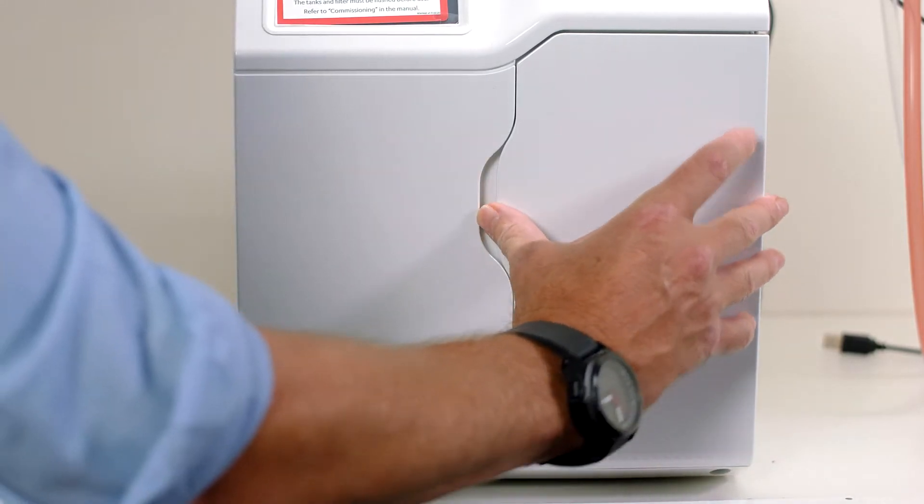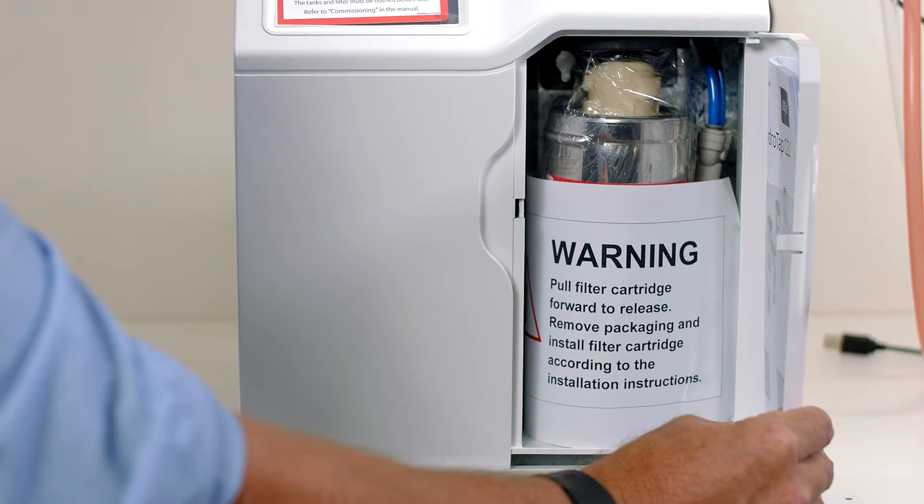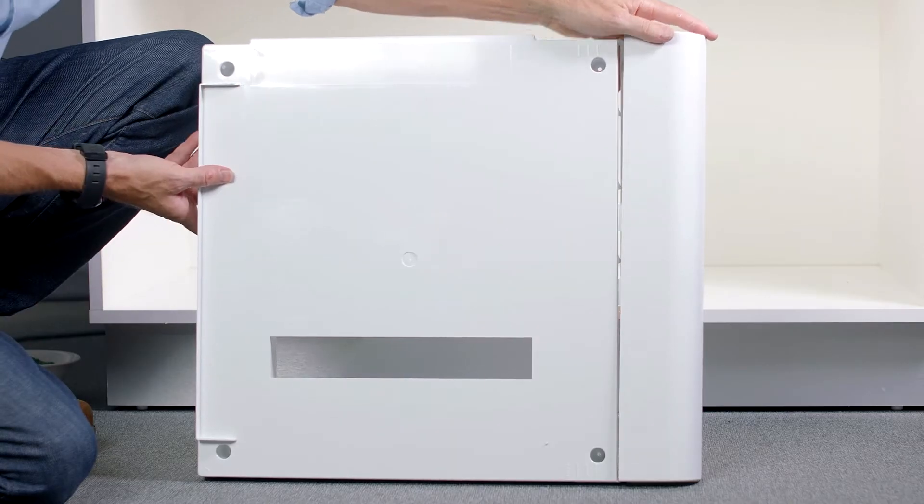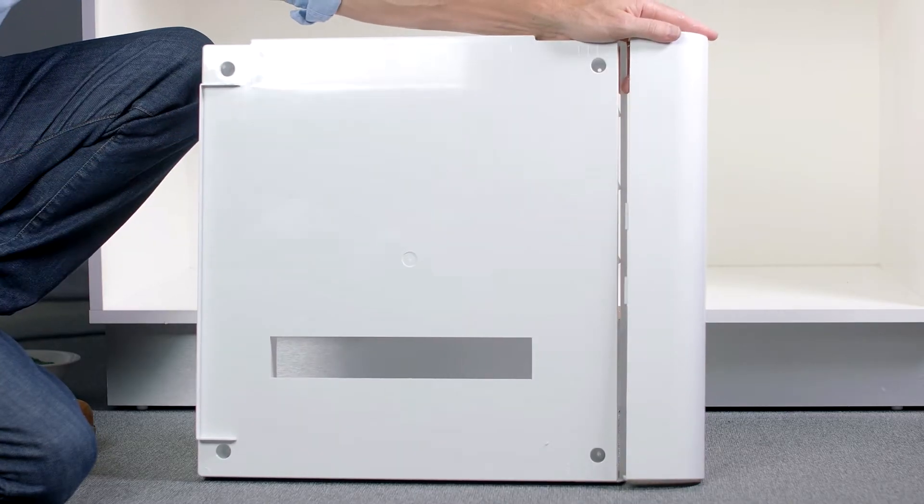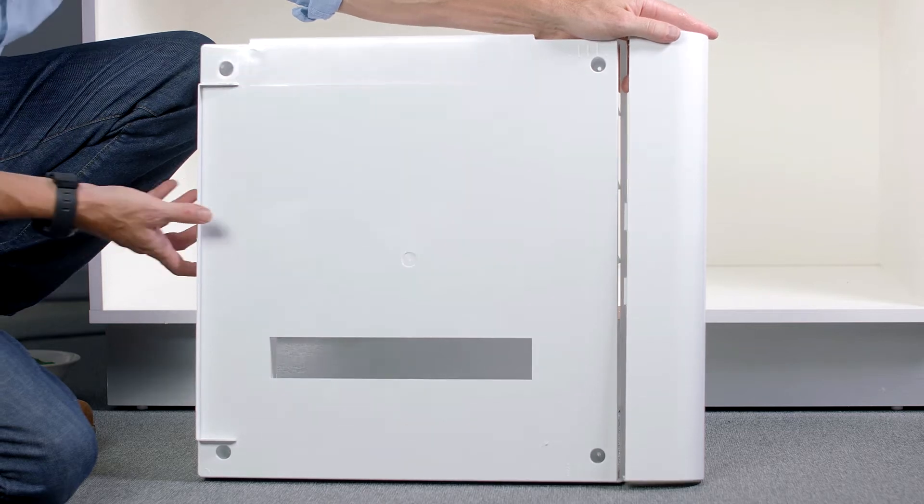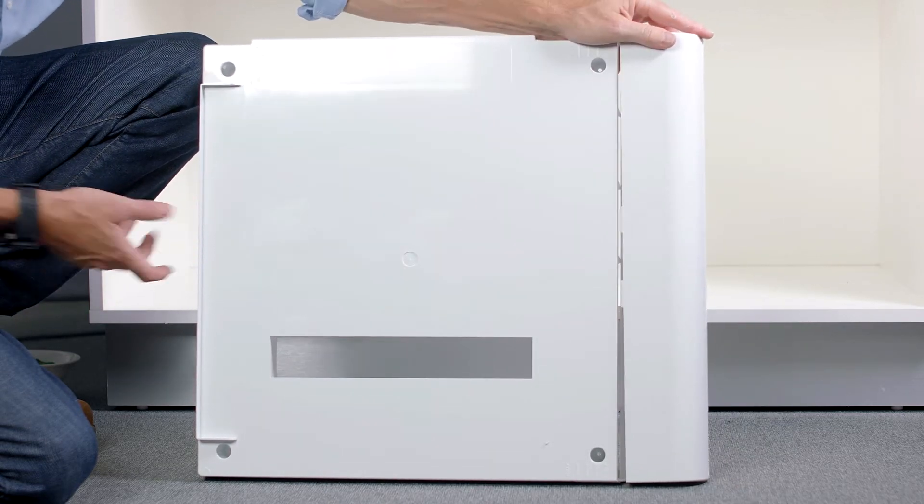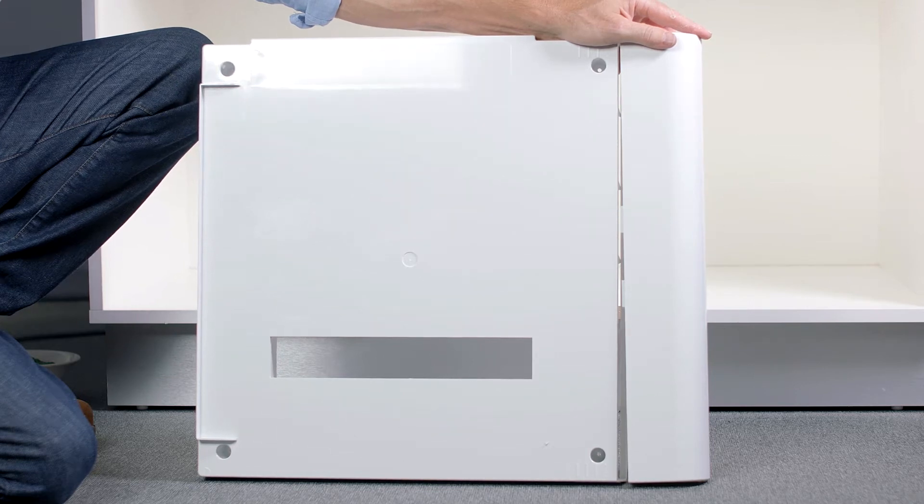The filter door houses the internal filter which needs to be fitted during installation. All chilled water commercial HydraTaps for 40, 60 and 100 people now come standard with a vent tray. This is to make correct installation of the HydraTap easier.